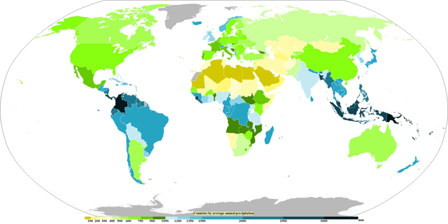Mechanisms of producing precipitation include convective, stratiform, and orographic rainfall. Convective processes involve strong vertical motions that can cause the overturning of the atmosphere within an hour and cause heavy precipitation, while stratiform processes involve weaker upward motions and less intense precipitation. Precipitation can be divided into three categories based on whether it falls as liquid water, liquid water that freezes on contact with the surface, or ice. Mixtures of different types of precipitation, including types in different categories, can fall simultaneously.